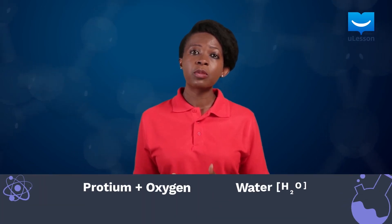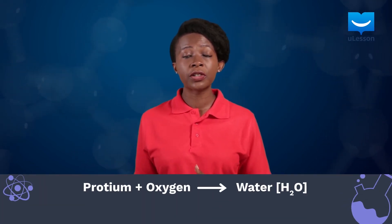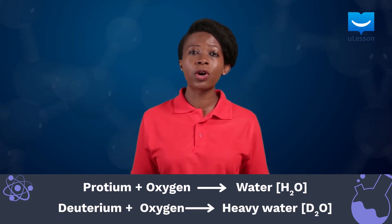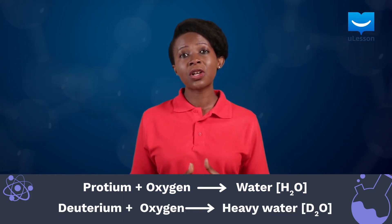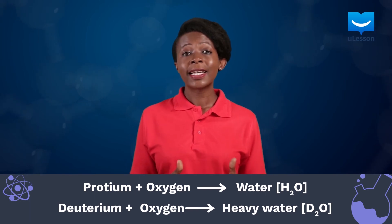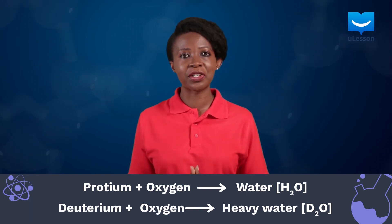Both protium and deuterium are chemically similar in the sense that they both react with oxygen to form oxides. However, protium will combine with oxygen to form water, while deuterium will combine with oxygen to form deuterium oxide, also known as heavy water. It is called heavy water because it is heavier than water.